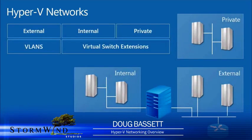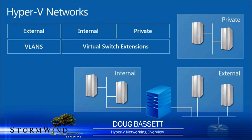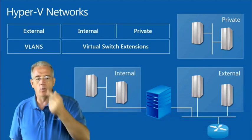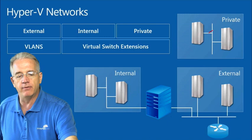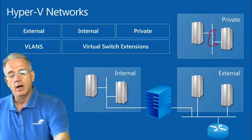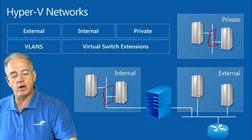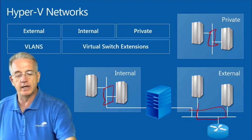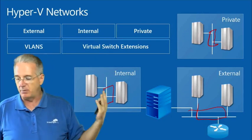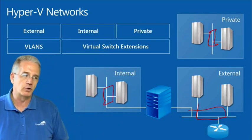Microsoft has changed how they do networks. They still call them by the same names: internal, external, and private. But now Microsoft implements them as virtual switches. There will be network switches connected within the system — these are virtual switches and they need to support virtual switch extensions.